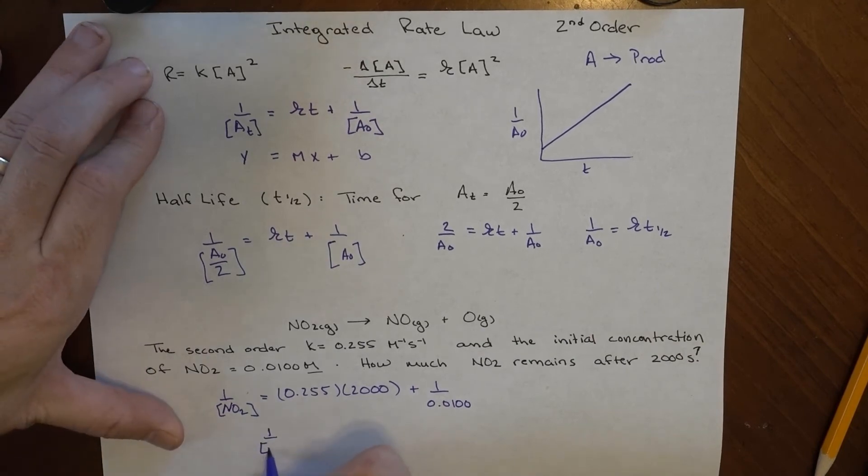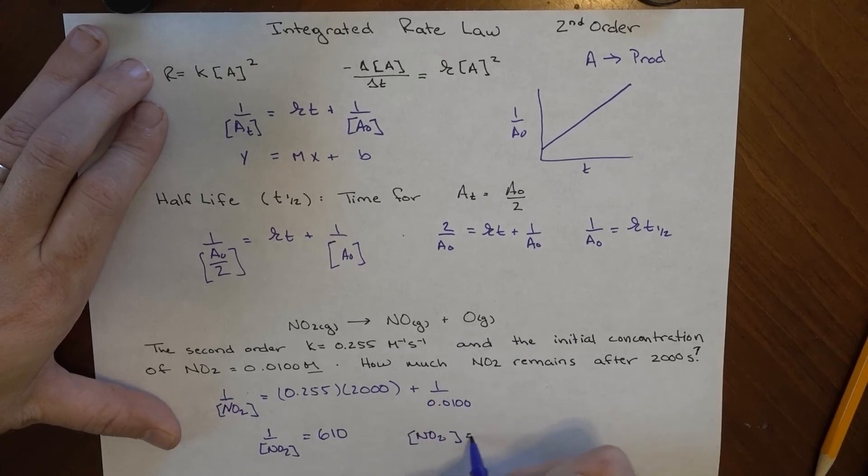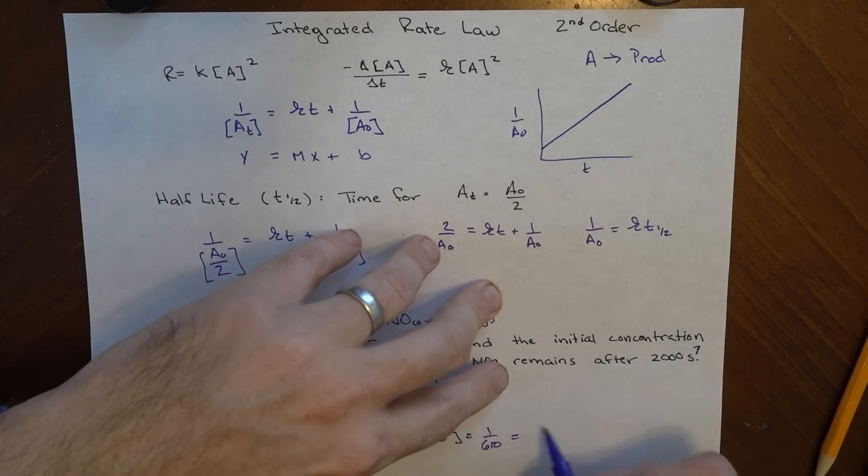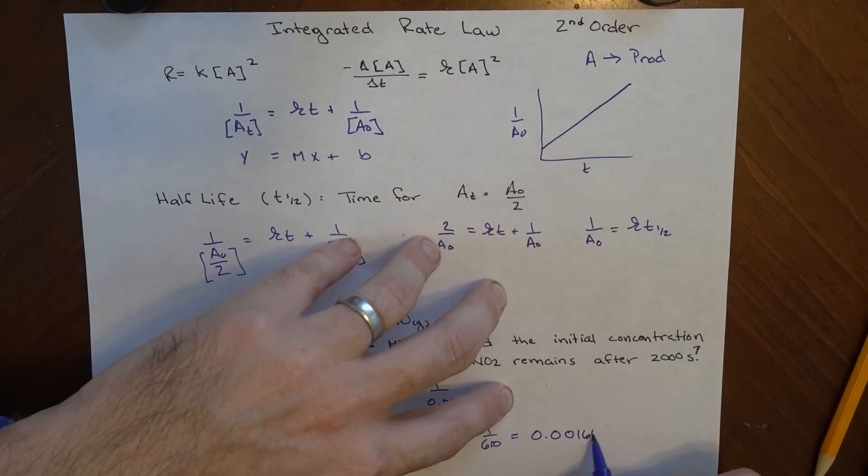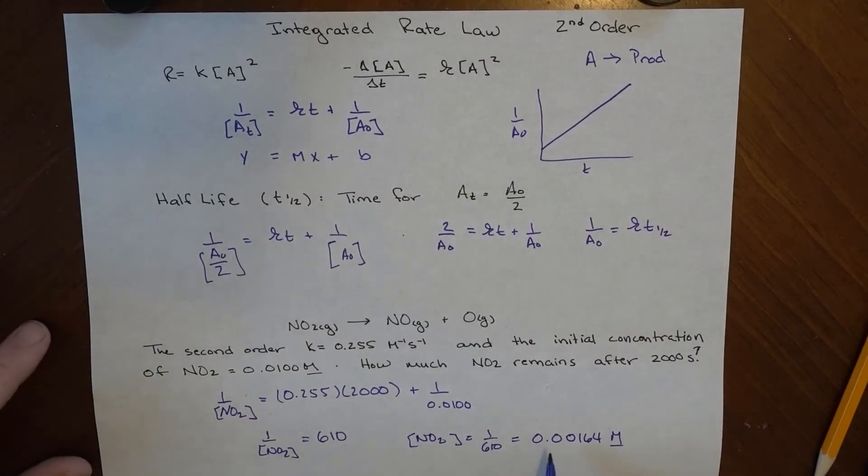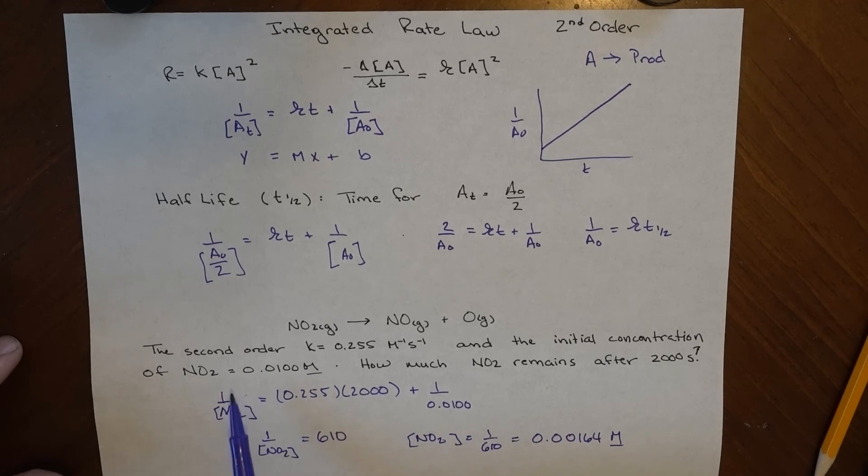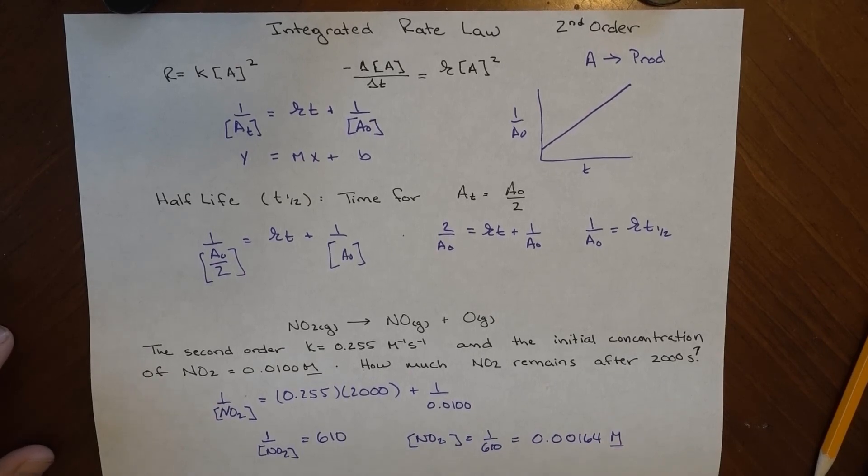So 1/[NO₂] is 610, and the way that I solve this is I basically take the reciprocal of both, so this becomes [NO₂] = 1/610, and that ends up being 0.00164 molar. The nice thing is we can take a look and see 0.00164 molar is significantly less than what I started with, 0.01 molar, so that means after 2,000 seconds a whole lot of this stuff has disappeared. I hope that helps with second-order rate laws.